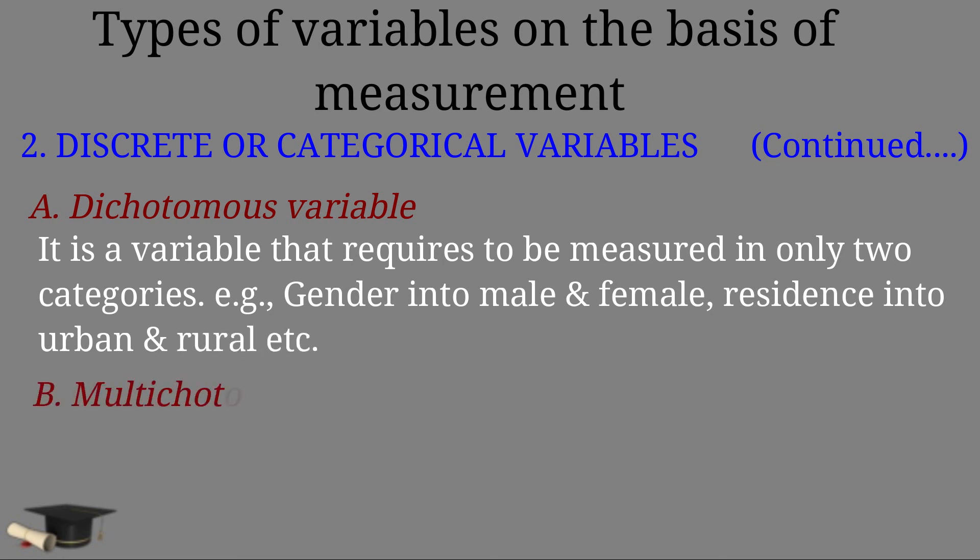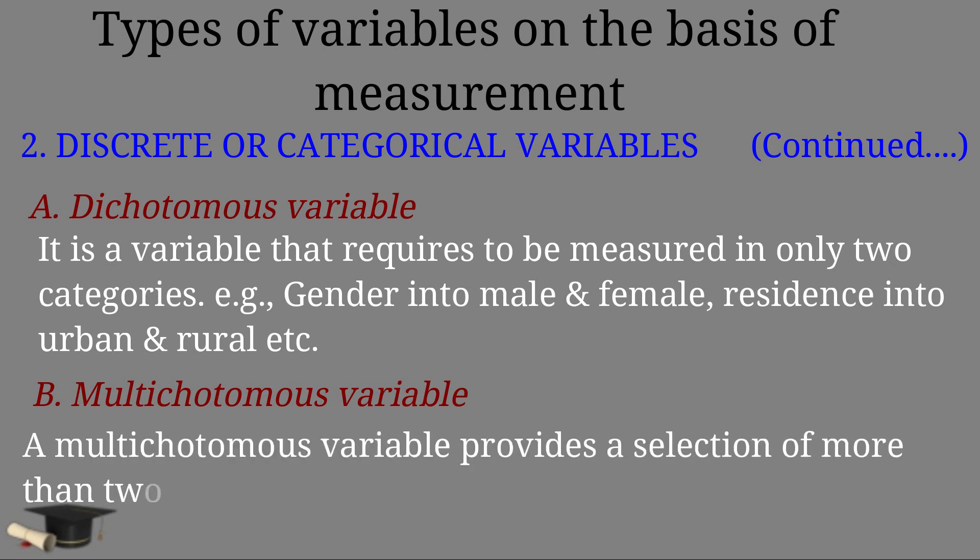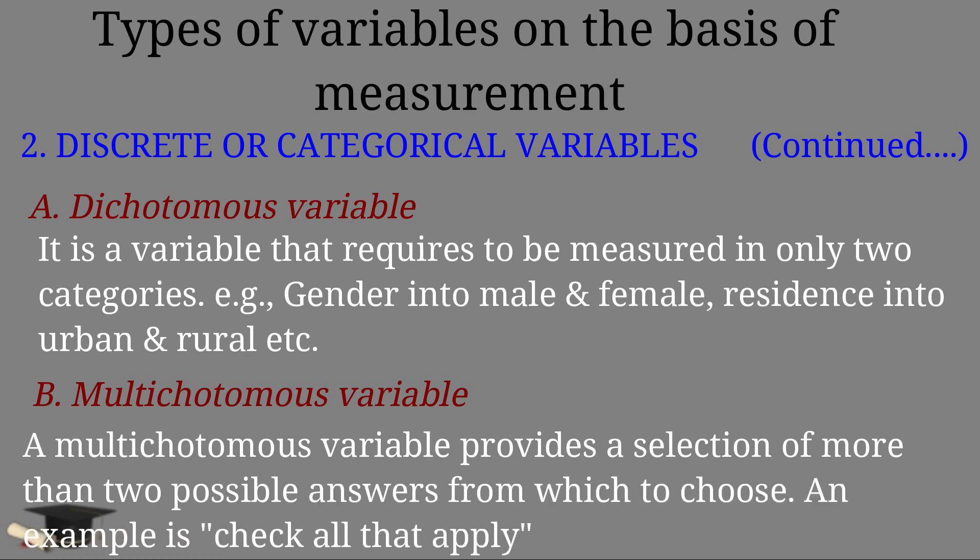Number two, multichotomous variable. A multichotomous variable provides a selection of more than two possible answers from which to choose. An example is check all that applied type of questions.